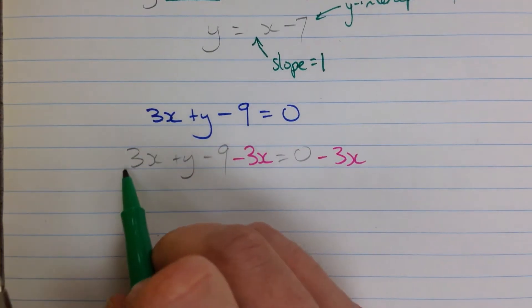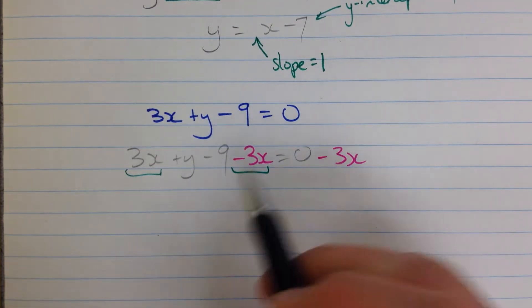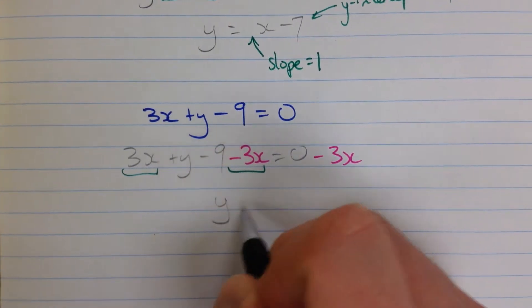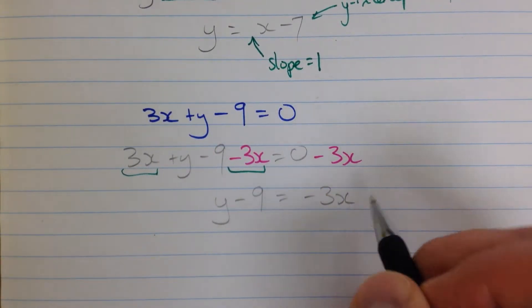We see that we have a 3x and a minus 3x. Those are going to cancel out, or the subtraction will be 0. That's why we're doing this. And we're left with, on this side, y minus 9 equals, over here, negative 3x.